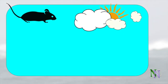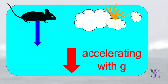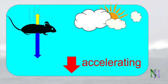This mouse is about to start falling. Initially it feels only the force of gravity and accelerates at 9.8 meters per second squared. Now that it has a velocity, the mouse begins to experience air resistance, which means that the resultant force on it and its acceleration are now less than g.